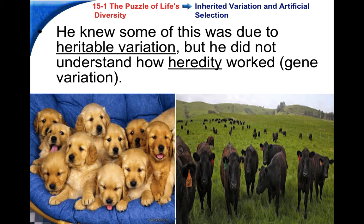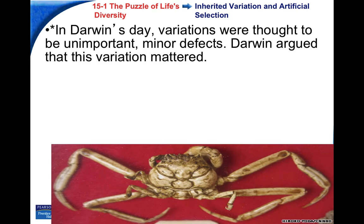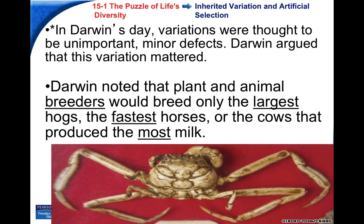Darwin knew that some of this variation was due to heredity. He didn't know how heredity worked because Gregor Mendel, the pea plant guy, had not yet published his work — that came about 40 to 50 years later. So Darwin didn't understand how heredity worked, but he knew it was controlled by some factor being passed down from parents to offspring. Most people thought variations were just minor defects, but he argued these variations mattered.